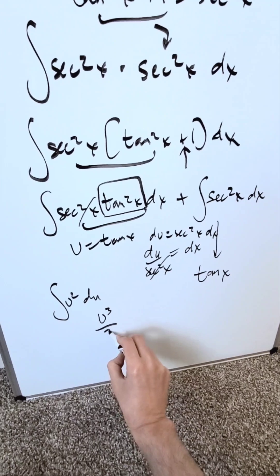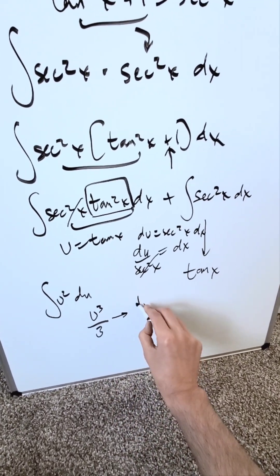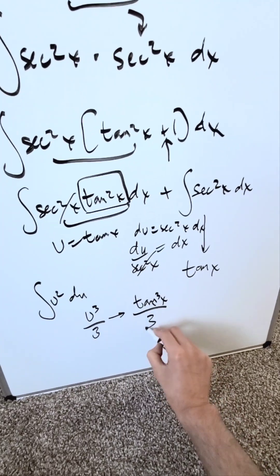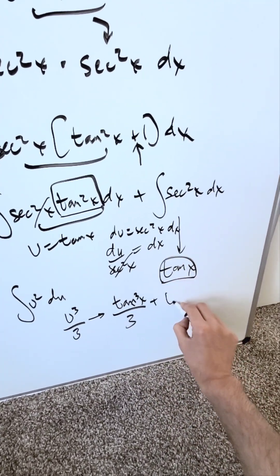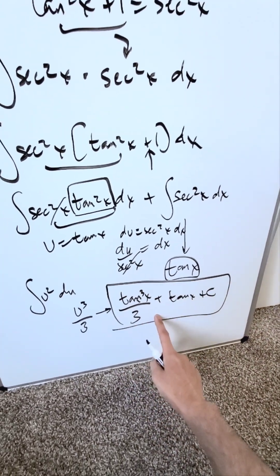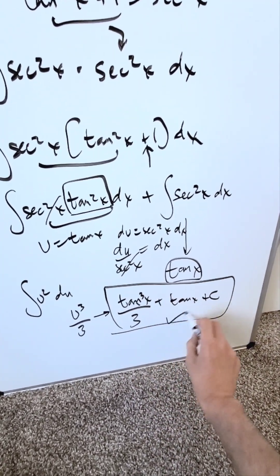You're looking at a u cubed over 3, but you resubstitute your u. So your end result anti-derivative is tan cubed x over 3, plus tan x plus c. This here is our anti-derivative of secant to the power of 4x. It should be correct.